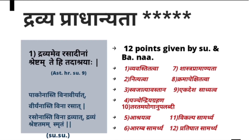The first nine points are given by Sushruta. The three additional points — Taratama Yoganupapatti, Vikalpa Samarthya, and Pratighata Samarthya — were added by Badanta Nagarjuna.